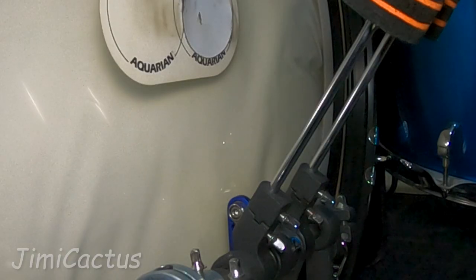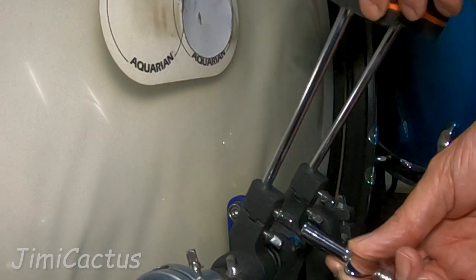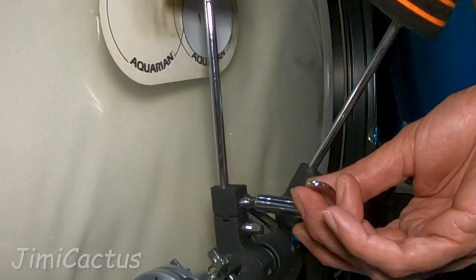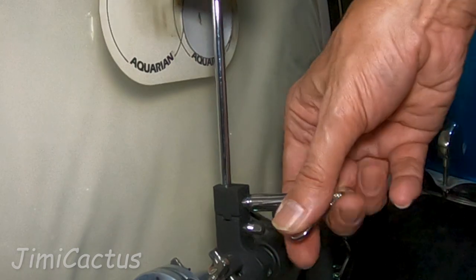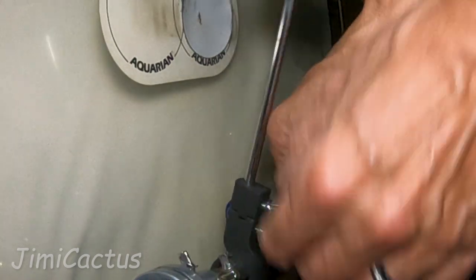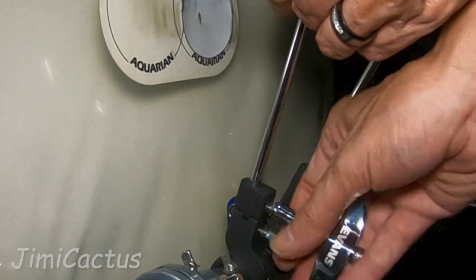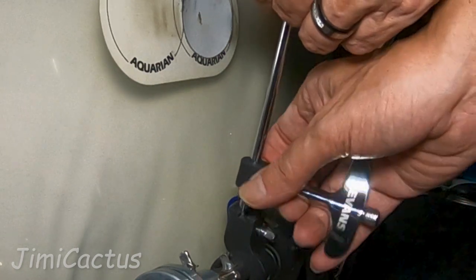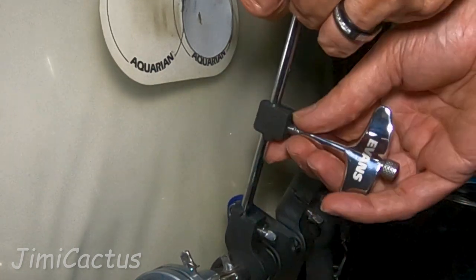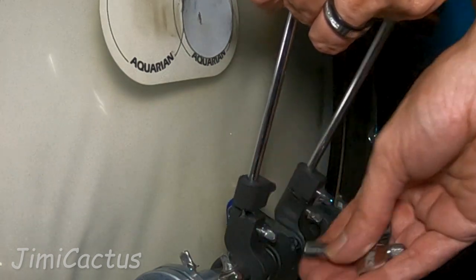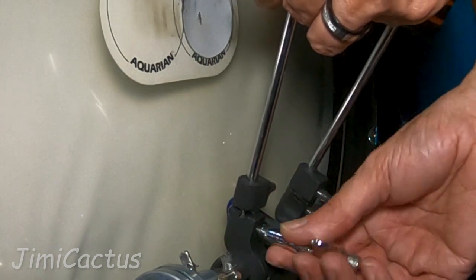You just take your drum key, line it up, give it a little twist, and it loosens that first part up, which is actually the adjustment for the height. I like to keep mine flush. Let's go to the second one.